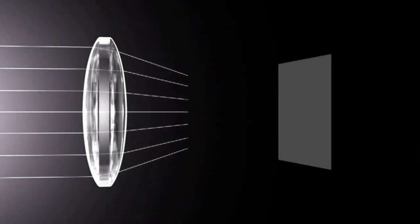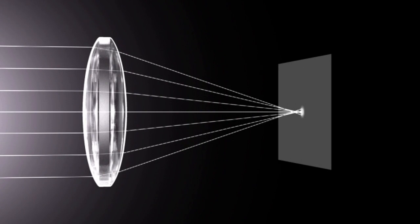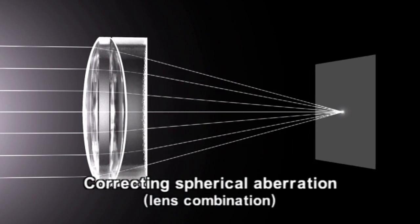Spherical aberration occurs in opposite directions in the case of convex and concave lenses, so aberrations can be corrected by combining these two lens types.